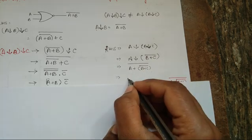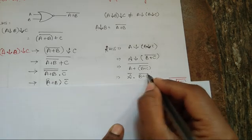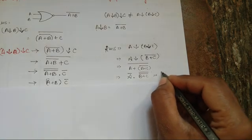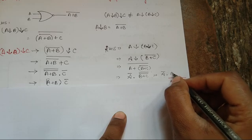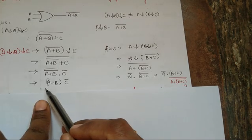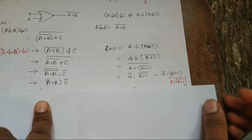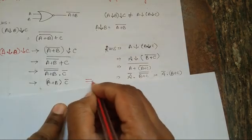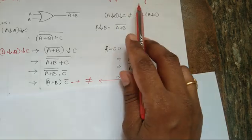Using De Morgan's theorem it becomes A bar into (B plus C whole bar) whole bar, splitting the bar. The double bar cancels, giving A bar into (B plus C). In the right-hand side we got A bar into B plus C, while the left-hand side gave A plus B into C bar. These two are not equal, which proves the non-associativity of the NOR gate.